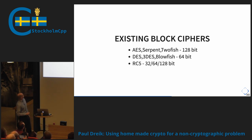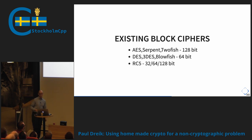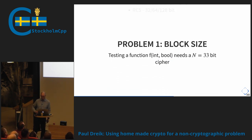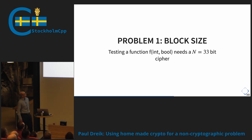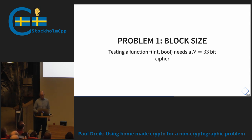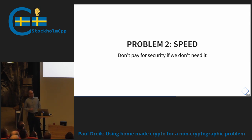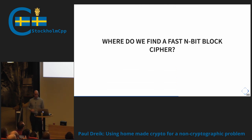Let's see where we can find a block cipher. AES is the most well-known — probably what you're using on your hard drive or iPhone — but it's 128 bits, and others are 64 or 32 bits. They are fixed bit sizes, and that's our first problem: if we need to test a function taking an integer and a bool, we'd need a 33-bit cipher, which doesn't exist. The second problem is speed — all existing ciphers are optimized for a given level of security, and that costs performance we don't need to pay for. So where do we find a fast N-bit block cipher with N arbitrary? We'll make our own.